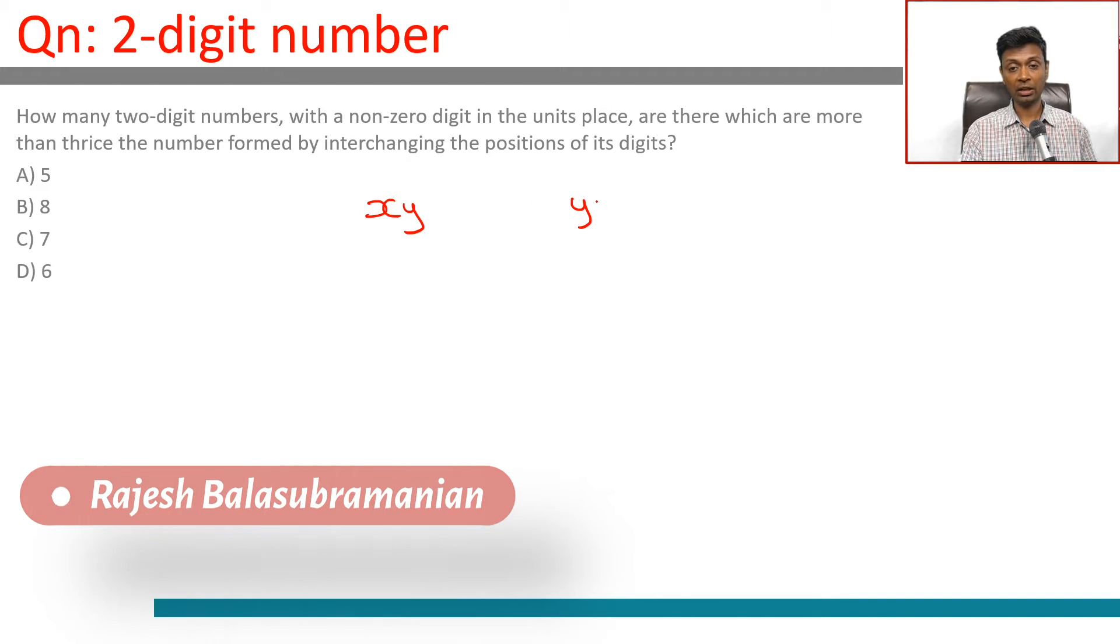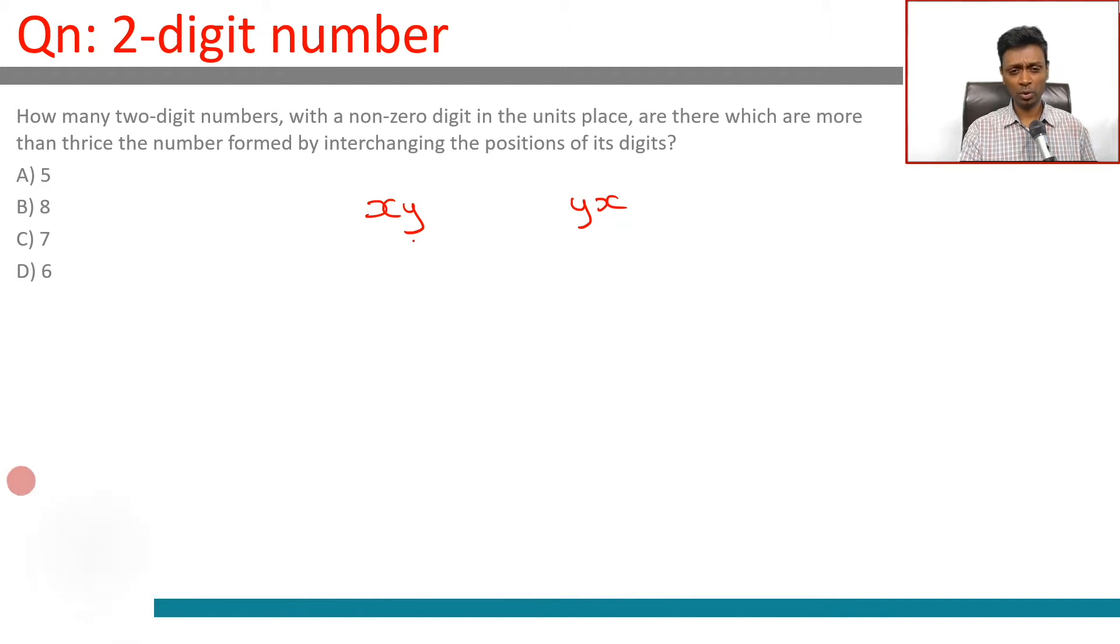Let's call the two-digit number xy. Y is not zero, otherwise it won't be a two-digit number. The two-digit number xy is greater than three times the two-digit number yx, or 10x plus y is greater than three times 10y plus x.